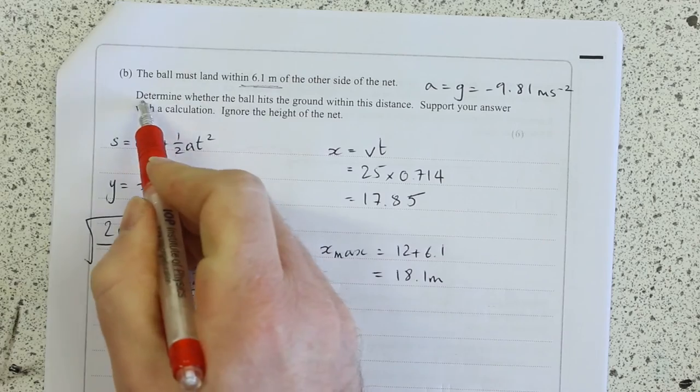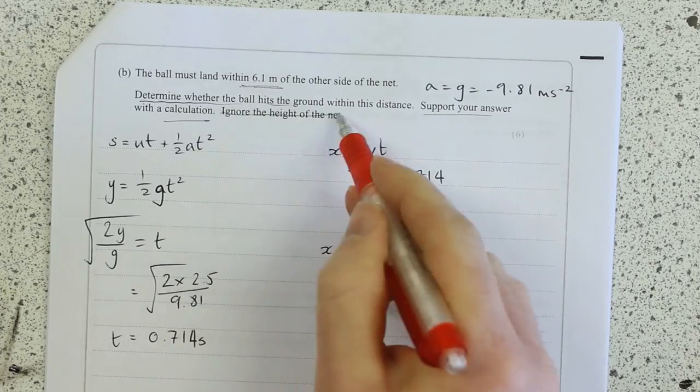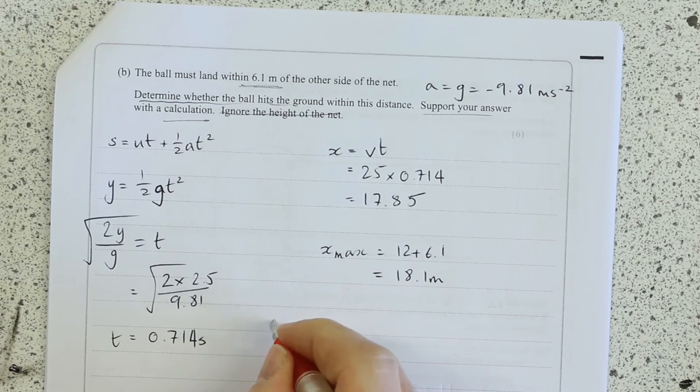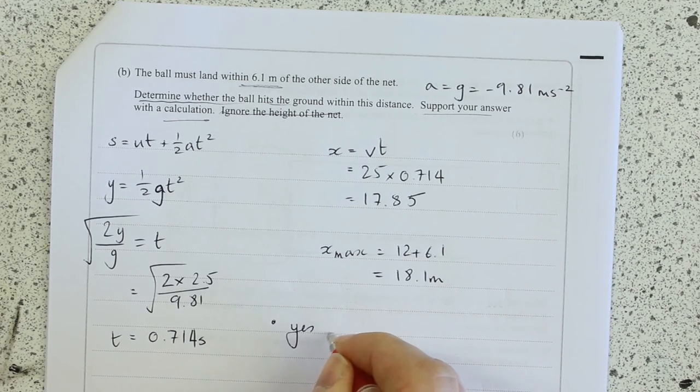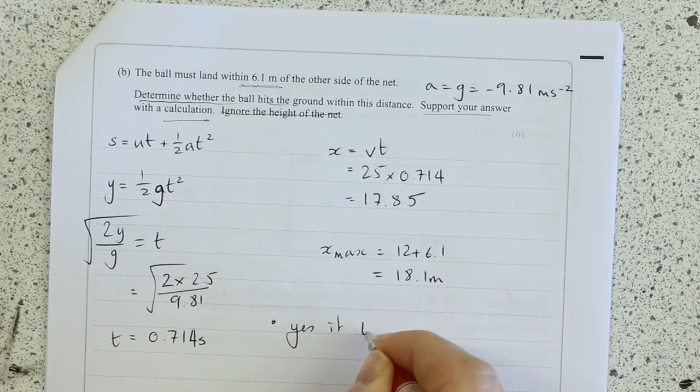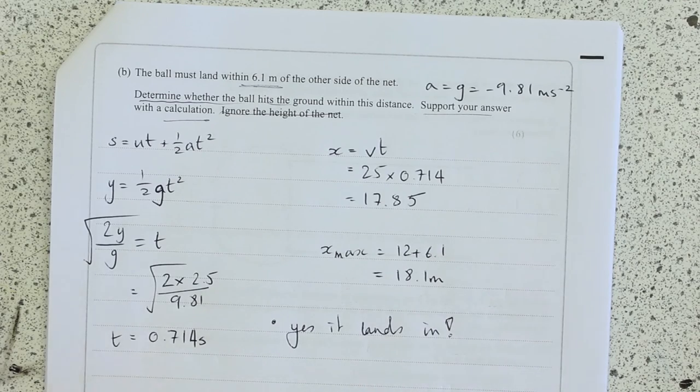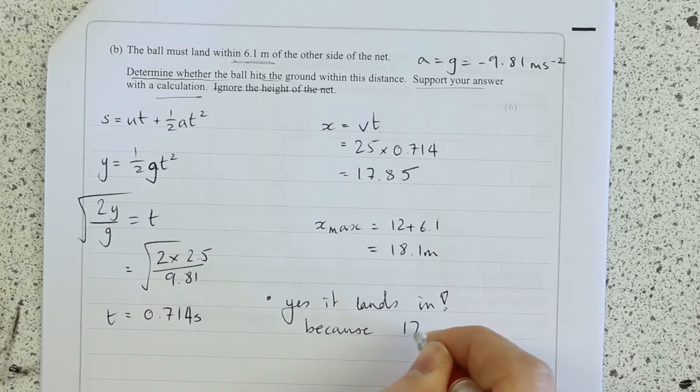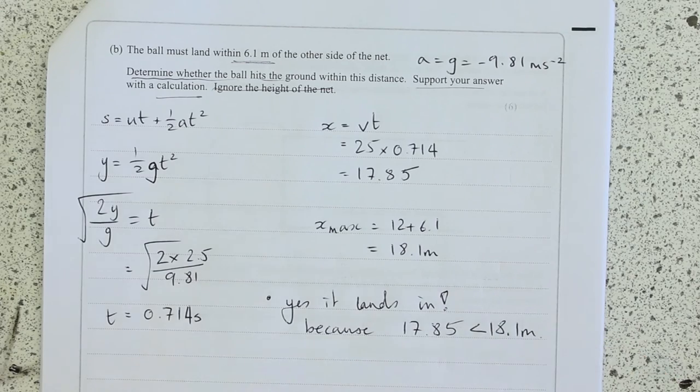And then determine whether I support it with a calculation. I've done all the calculations. I haven't bothered with anything to do with the net the whole time. And I can now just make a conclusion. Yes, it does. It lands in. I don't know whether it's an ace or not, but there we go. It lands in because 17.85, which is the range, is less than 18.1 meters.